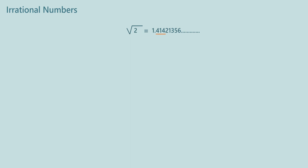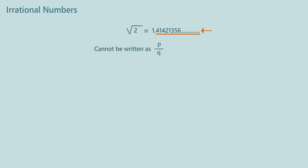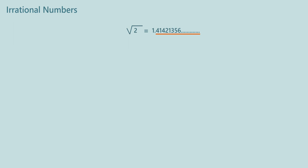Note that the numbers after the decimal point are unending, which means the decimal form is non-terminating. Also, there is no recurring pattern of digits after the decimal point. So we cannot write such numbers as a ratio of two integers P/Q where Q is not equal to 0. You would have noticed we are facing difficulty in estimating square root of 2 accurately. Interestingly, such a number does exist, so we can show it on the number line and its location is after 1.4.